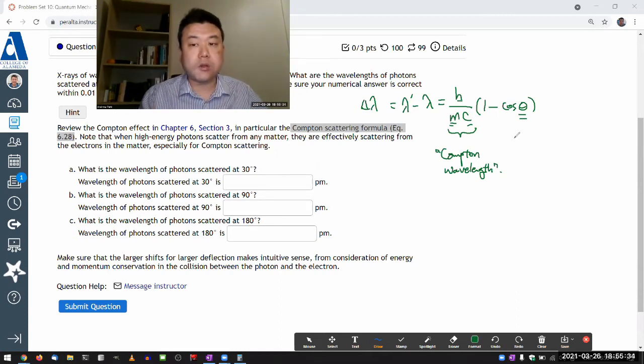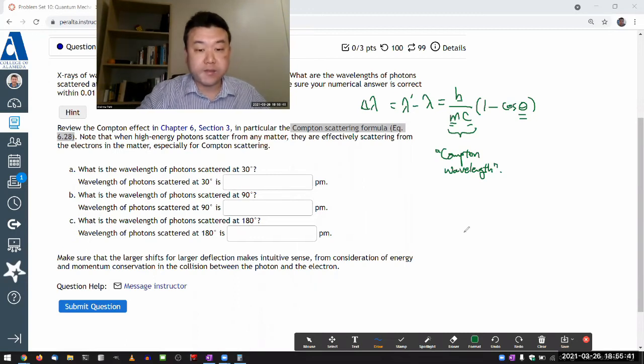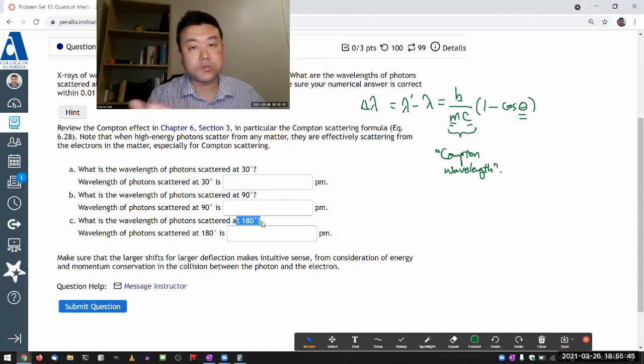So the closer this is to zero, the more kind of a grazing collision it is. And at 180 degrees is where it's a head-on collision and the photon just goes straight back the way it came.